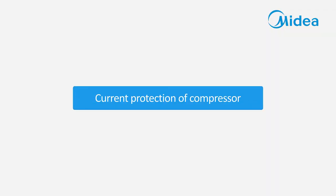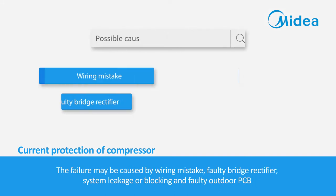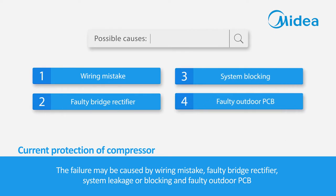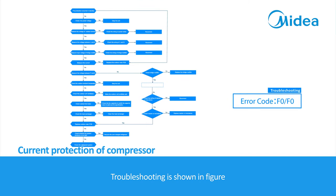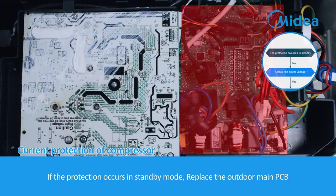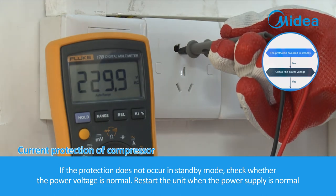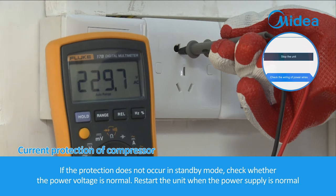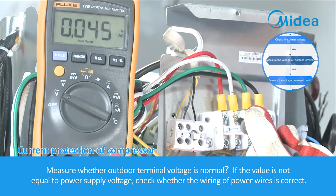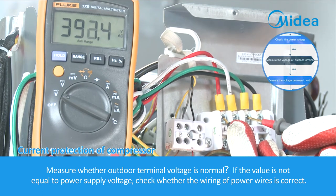Current protection of compressor. Malfunction conditions: if the outdoor current exceeds the current limit value, the LED will display the failure. The failure may be caused by wiring mistake, faulty bridge rectifier, system leakage or blocking, or faulty outdoor PCB. Troubleshooting: if the protection occurs in standby mode, replace the outdoor main PCB. If the protection does not occur in standby mode, check whether the power voltage is normal and restart the unit when the power supply is normal. Measure whether the outdoor terminal voltage is normal; if not equal to power supply voltage, check the wiring of power wires.